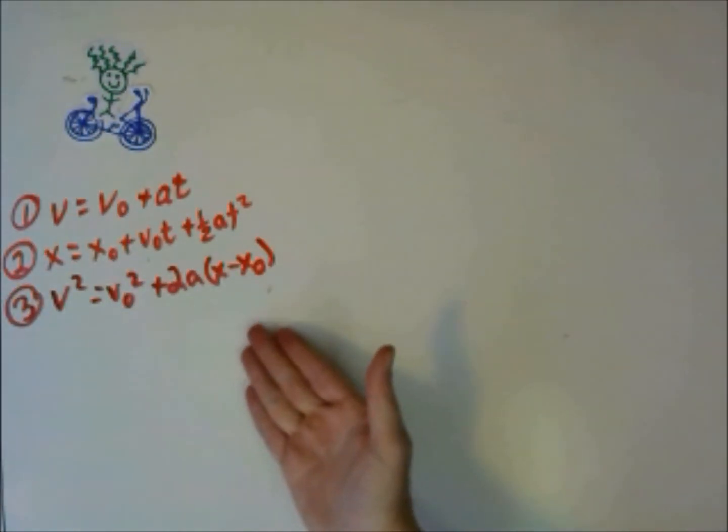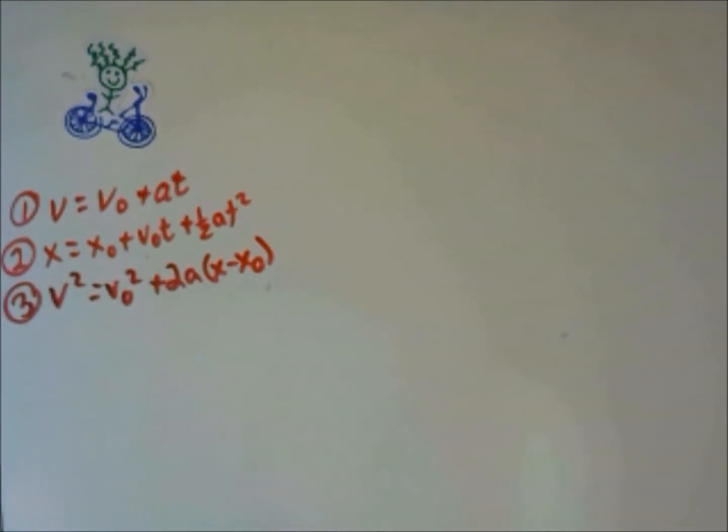So now we have three kinematics equations. This is what we're going to use to solve many problems that have to do with one-dimensional motion. Depending on what you're given, you'll decide which equation is the best equation to use. Let's do three examples.